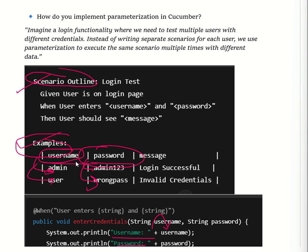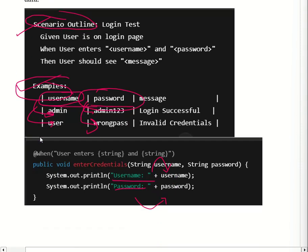In the feature file, username in angular brackets and password will be replaced by values like 'admin' and 'admin123'. After that execution, it will take the second row values like 'user' as the username and 'wrong password' as the password. In this way we use Scenario Outline and Examples to implement parametrization in Cucumber. This is also reflected in the step definition file.